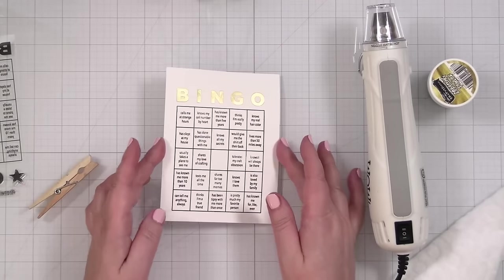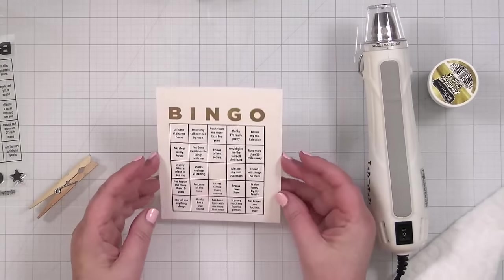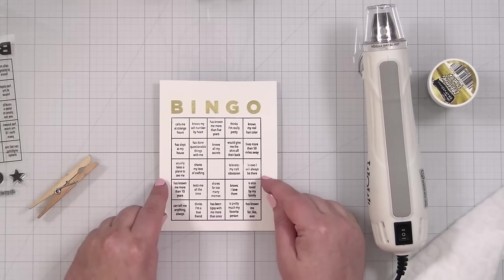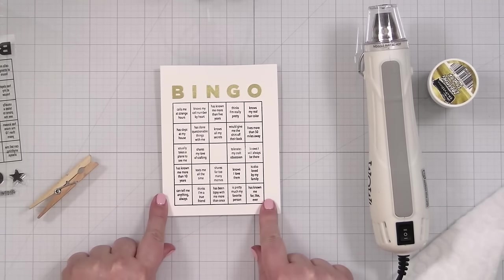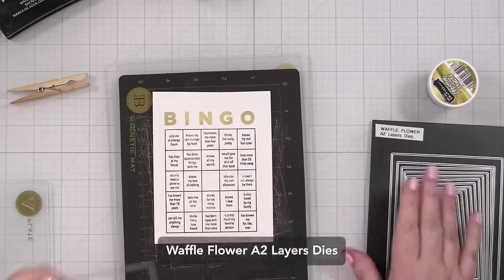So now I have my shiny bingo, right? And what I need to do is trim this down and it's going to help also to flatten. So let me grab a die.